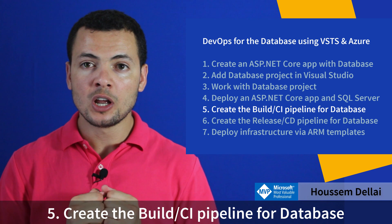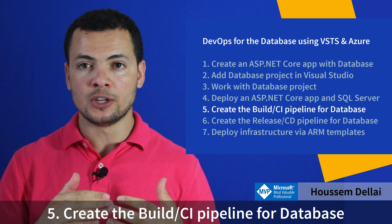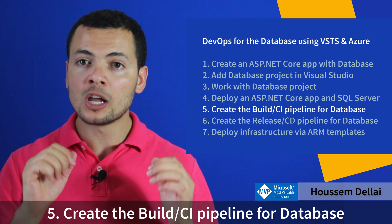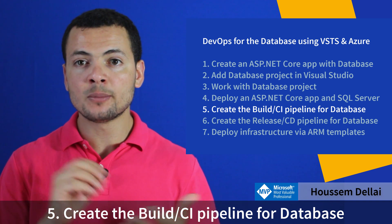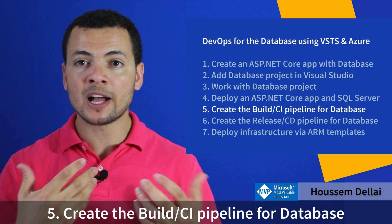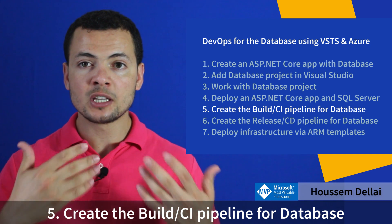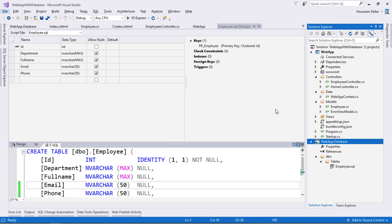This project contains the changes to the schema in SQL script, so building the database project will generate a dacpac file that contains the new schema of the database. CI and CD pipelines always start with the source control.